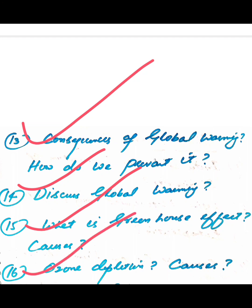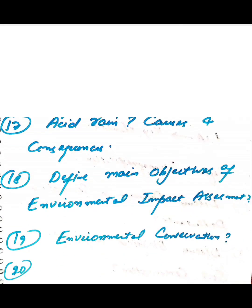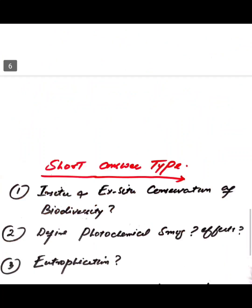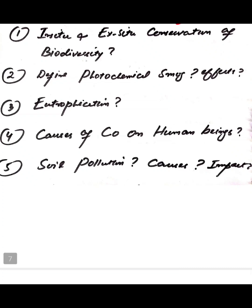Further questions: what is the greenhouse effect and its causes, what is ozone depletion, its causes and consequences — these are standard questions that appear in almost every paper. Question 17: what is acid rain, its causes and consequences, and its impact on the environment. Question 18: define the main objectives of Environmental Impact Assessment — it can also appear in short form as 'what is the full form of EIA?' The last question concerns environmental conservation.